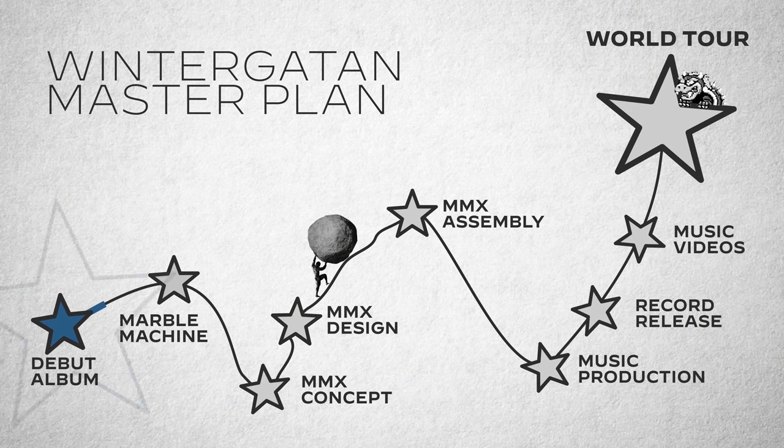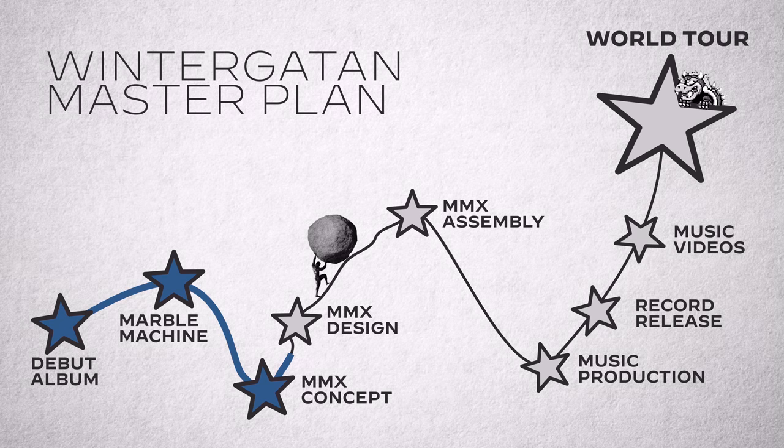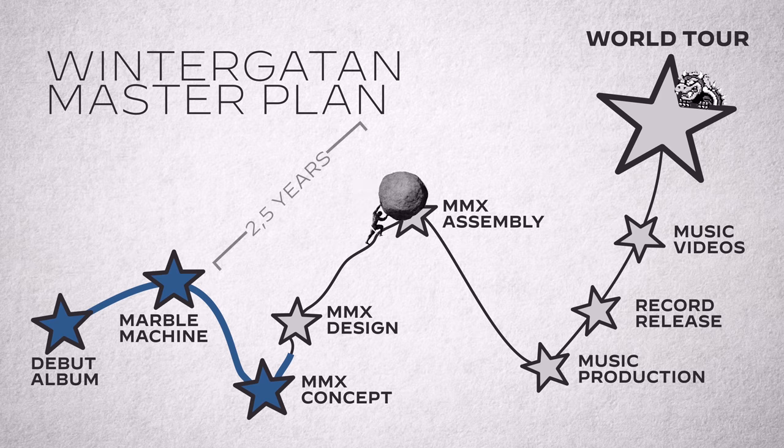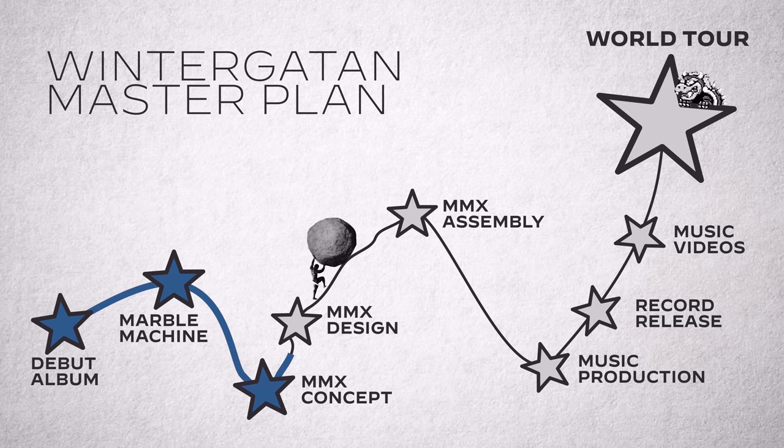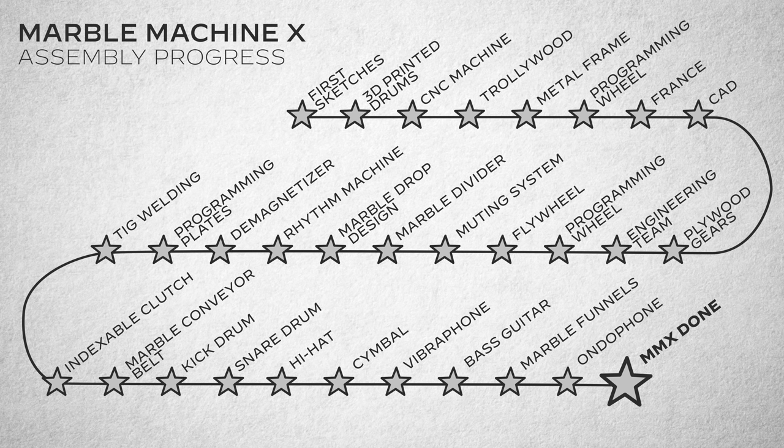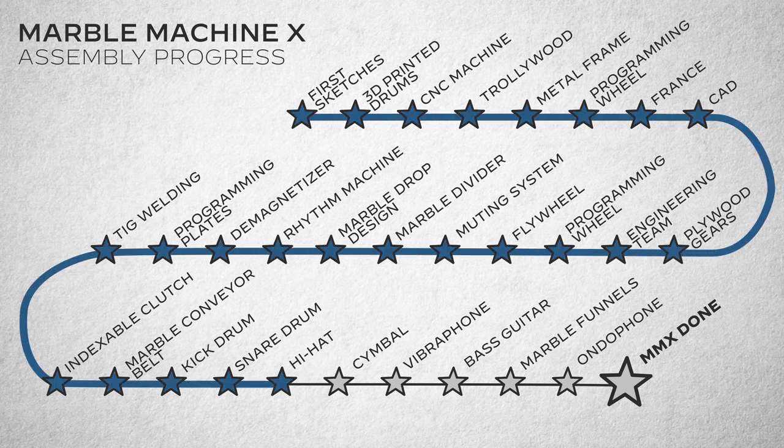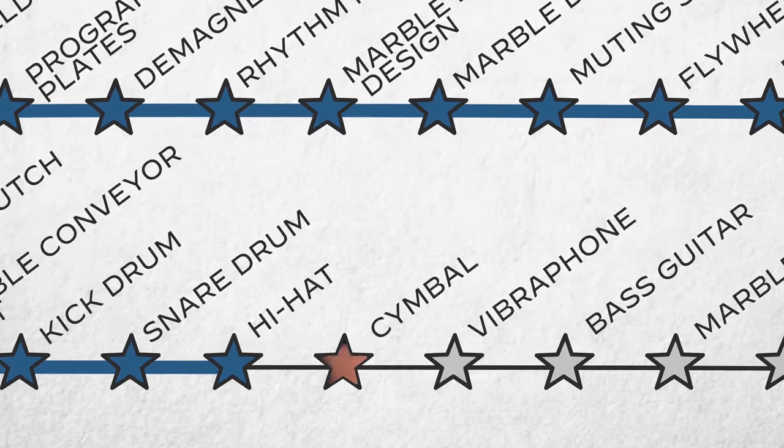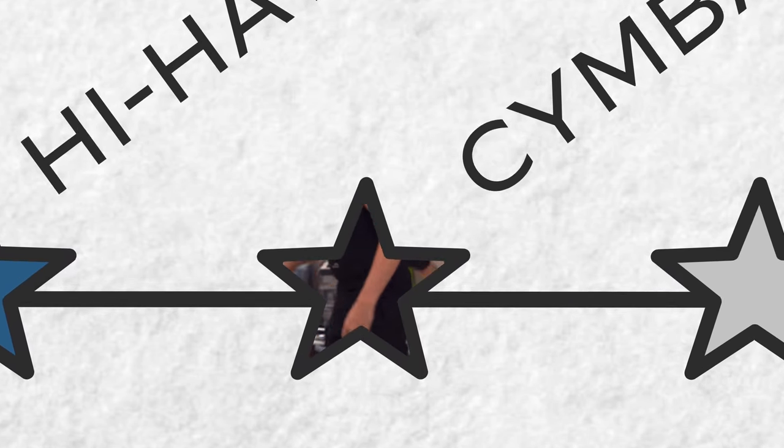This is the Wintergatan master plan for all the steps leading up to the world tour. I am currently pushing the rock up this Marble Machine X hill. I have been spending two and a half years of my life on this hillside, trying and trying again to make the Marble Machine X work. Let's go one level deeper and look at the Marble Machine X assembly progress. Here we can see that we've done quite a lot and that we're coming closer to completion. Today I hope to finish the cymbal and get another star off.